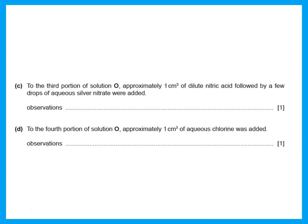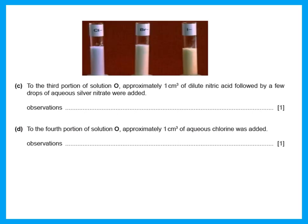To the third portion of solution O, approximately 1 cm³ of dilute nitric acid followed by a few drops of silver nitrate were added. Silver nitrate tests for halides — chloride gives a white precipitate, bromide gives a cream precipitate, and iodide gives a yellow precipitate. Since the solid is ammonium bromide, we have bromide, so a cream precipitate is expected.